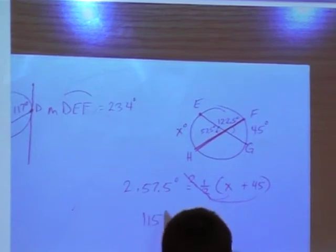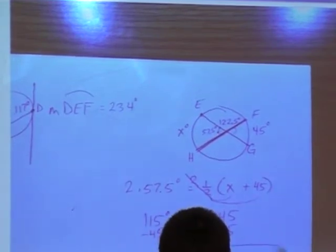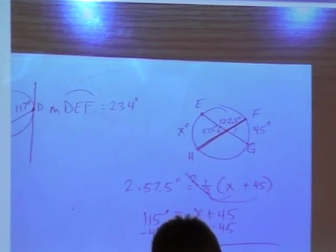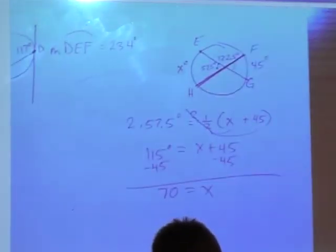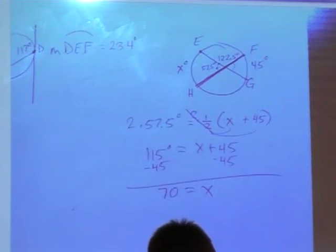115 degrees equals X plus 45. Now what do you do? Subtract the 45. And what do we get? 70. Is what X equals. That's what X is. To figure out the degree, you plug it back into the picture. It just happens X is by itself, so it is 70 degrees. All right. So that was kind of difficult, right? No? Good. That's what I want to hear. All right. Let's try it again. Let's try something else.